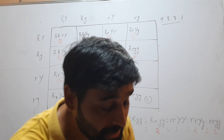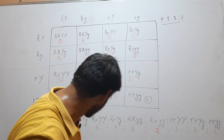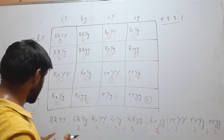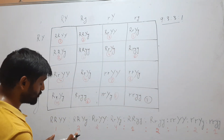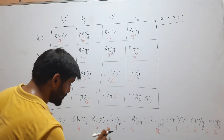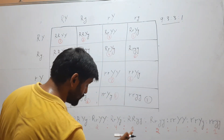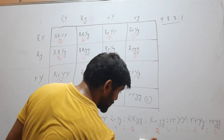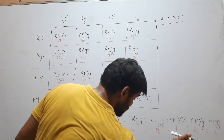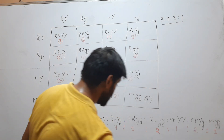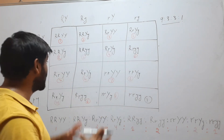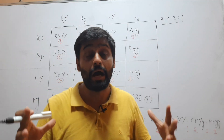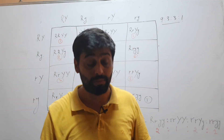So, what will be the xenotypic ratio? It is 1:2:2:4:1:2:1:2:1. This will be the xenotypic ratio of a dihybrid cross.